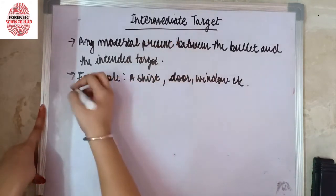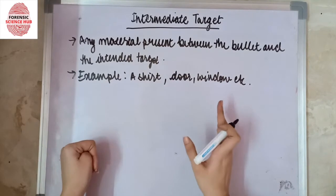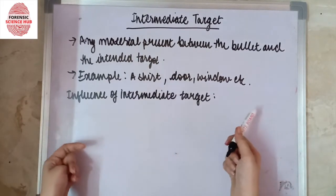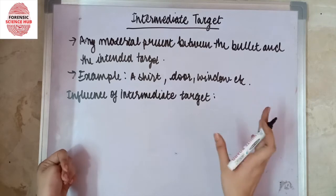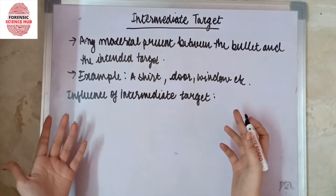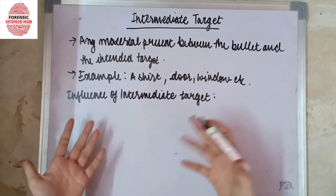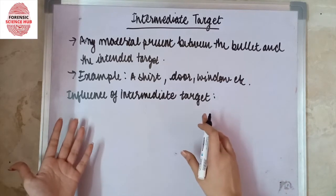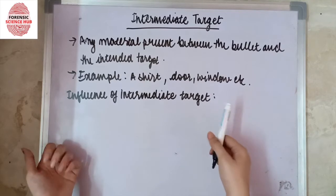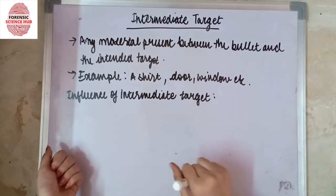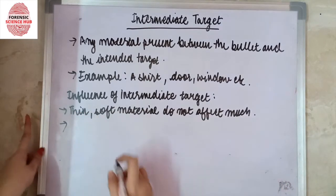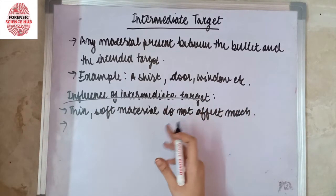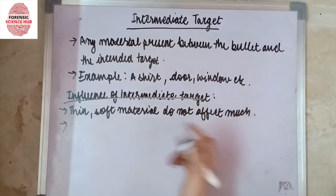Now let's discuss the influences of intermediate targets. If the intermediate target is thin or soft, such as a shirt, it may not have a significant influence on the wounding power of the projectile. However, the intermediate target may increase the spread of the projectile and may cause backscatter marks.